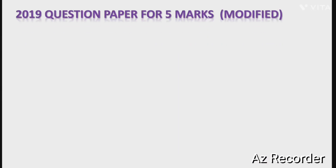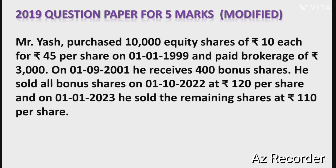The problem is as follows: Mr. Riesh purchased 10,000 equity shares of Rs. 10 each at Rs. 45 per share on 1st January 1999, and paid brokerage of Rs. 3,000 at the time of purchase. On 1st September 2001, he received 400 bonus shares. He sold all 400 bonus shares on 1st October 2022 at Rs. 120 per share.